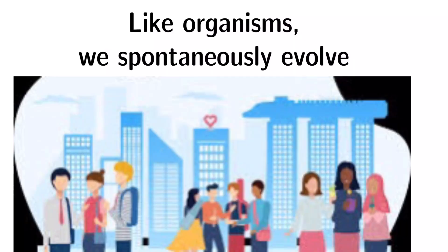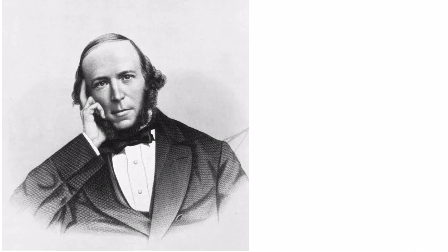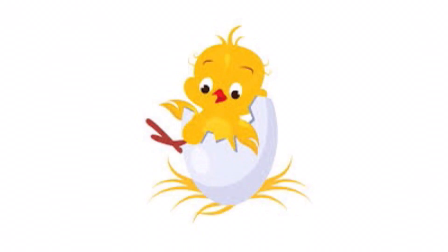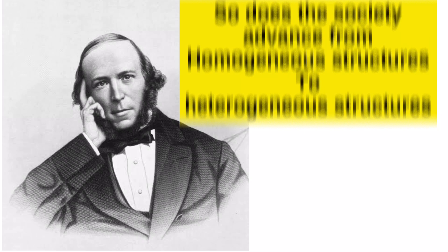He included physical and biological evolution to explain the theory of social evolution. He explains that just like a seed grows to become a tree, an egg becomes a fully grown chicken, and an ovum would also grow into an animal — so does society advance from homogeneous structures to heterogeneous structures?